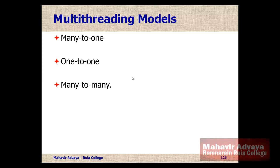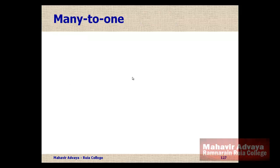So, multithreading models. There are three multithreading models that we are going to discuss: many-to-one, one-to-one, and many-to-many.